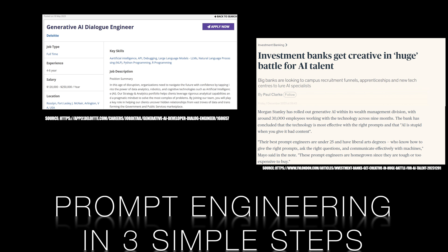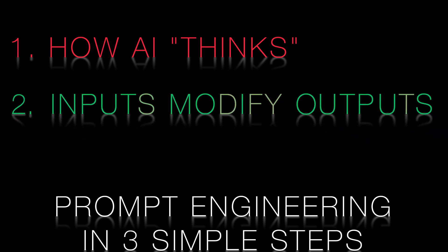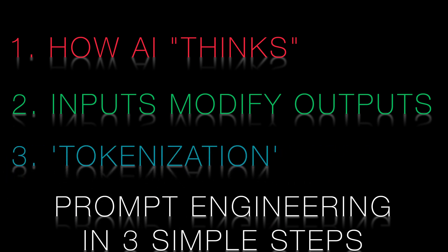In the burgeoning field of AI, prompt engineering has emerged as a high-demand skill, with top firms offering salaries exceeding $300,000. In this video, we'll explore three simple steps: how AI models like ChatGPT think, how changing their inputs changes their outputs, and the power of breaking down words into tokens.